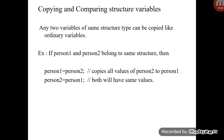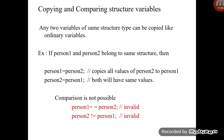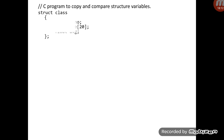However, comparing two structure variables is different. You cannot write `person1 == person2` — this is invalid in C. To check whether two structure variables hold the same values, you must compare each member individually and manually. Direct comparison of structure variables using relational operators is not supported.